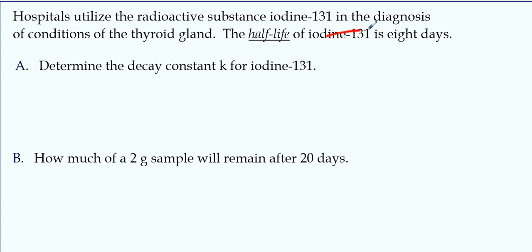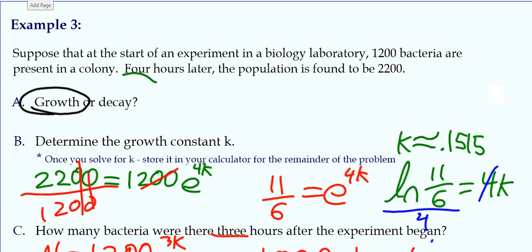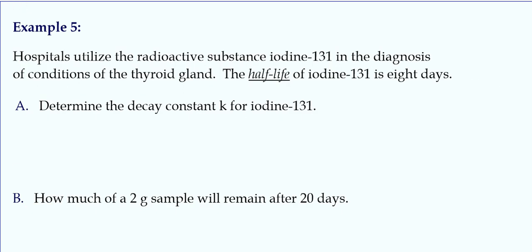They tell you the half-life is eight days. And we know half-life, the formula, natural log one-half equals kt. Natural log one-half equals kt. And they tell us that the half-life is eight days. So plug in eight for t.